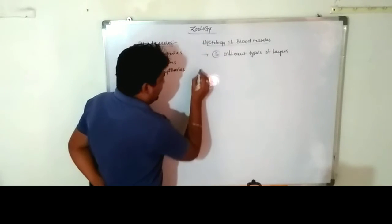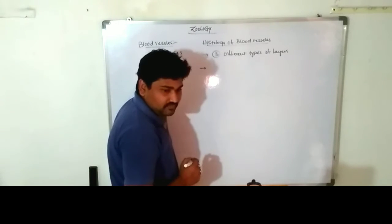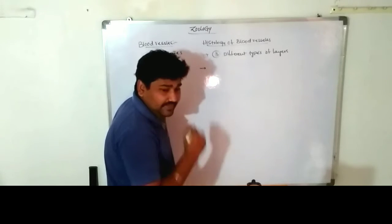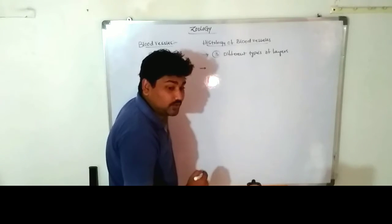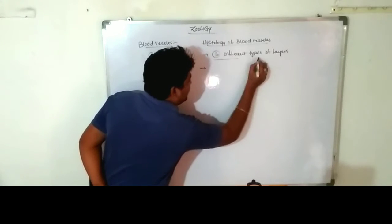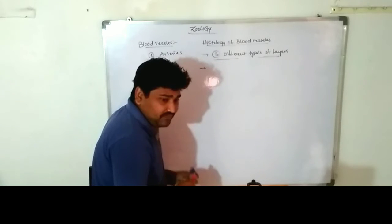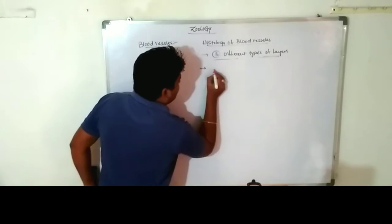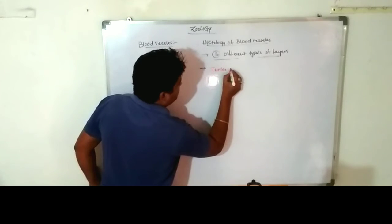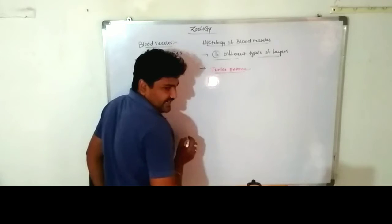The three different types of layers are: the first one, the outermost layer, is known as tunica externa; the inner layer is known as tunica interna; and the layer in between the outer and innermost is known as tunica media.